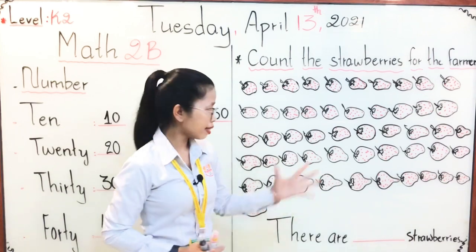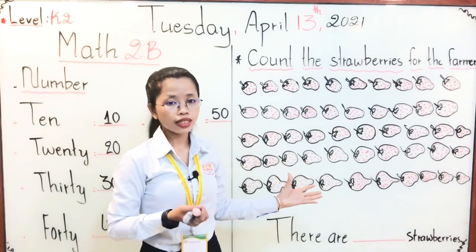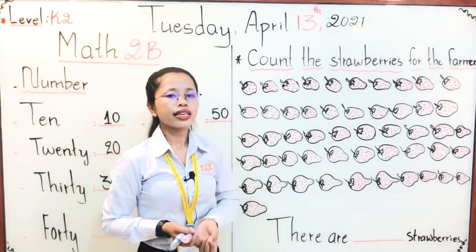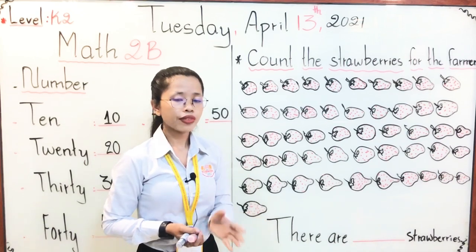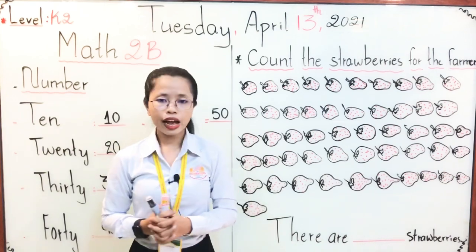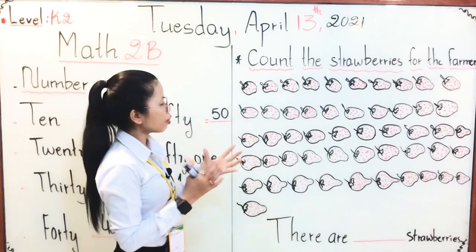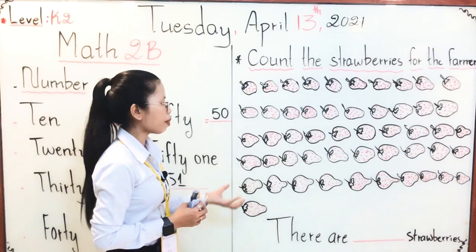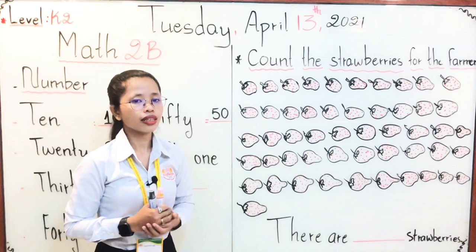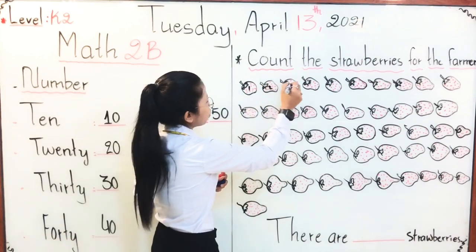What pictures are these? These are strawberries! Do you like to eat strawberries? If you like to eat strawberries, you have to say 'Yes, I do.' But if you don't like to eat strawberries, you have to say 'No, I don't.' Now it is time for you to do the counting together.